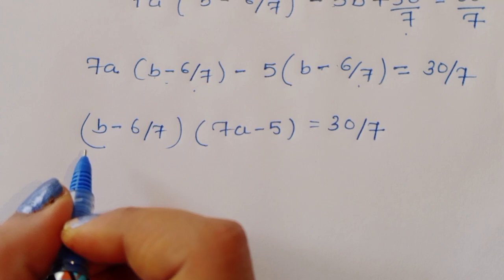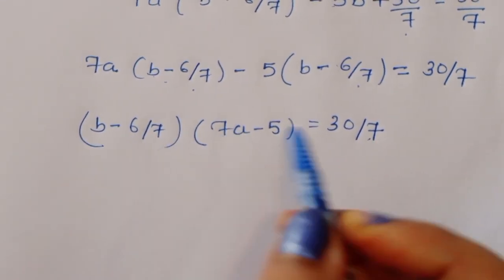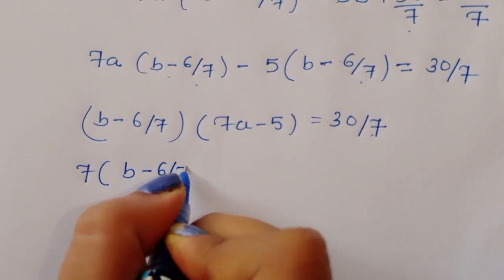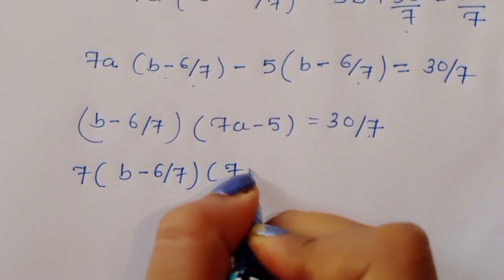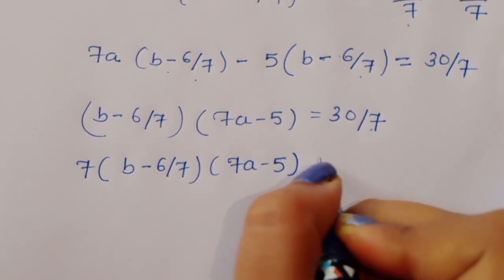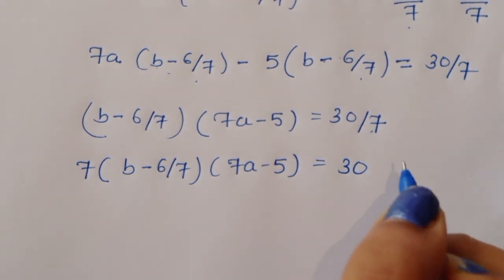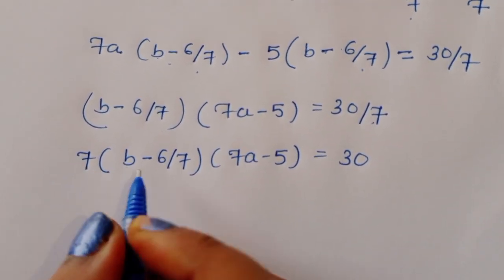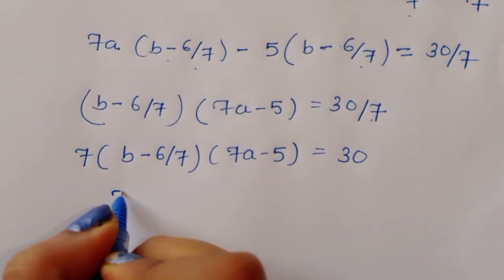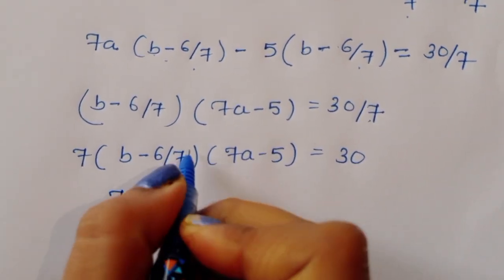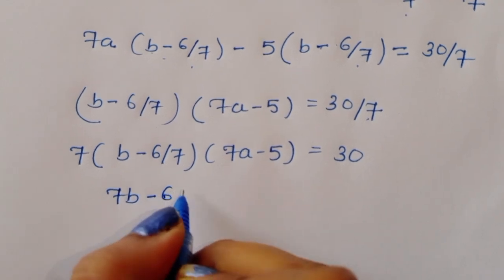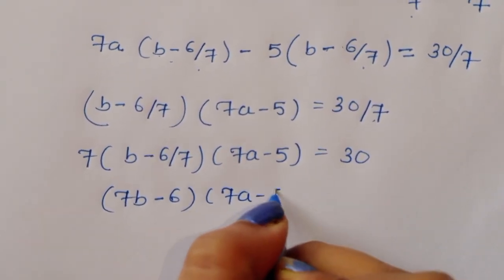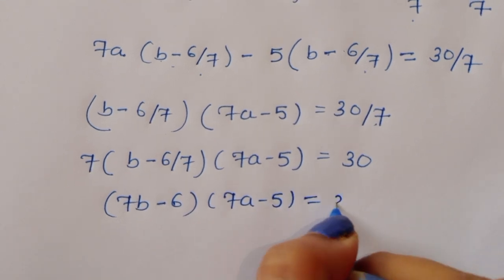We multiply through by 7 to clear the fraction: 7 times (B minus 6/7) times (7A minus 5) equals 30. Expanding gives (7B minus 6) times (7A minus 5) is equal to 30.